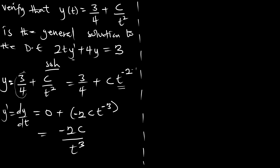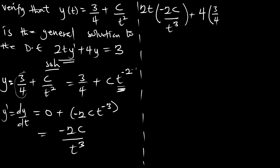Let's substitute into the general equation 2t · y' + 4y = 3. Substituting: 2t · (-2c/t³) + 4 · (3/4 + c/t²). The 2t and t³ simplify to give -4c/t², then 4 · 3/4 = 3 and 4 · c/t² = 4c/t².